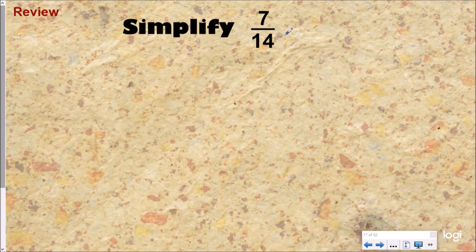So as you remember, simplifying is using the identity property of division to divide a fraction by another fraction equivalent to one whole. And so we are going to divide here by seven over seven, which is going to give us a simplified answer of one-half.